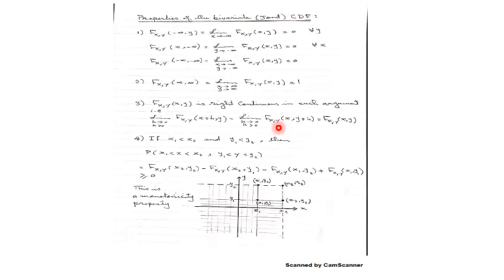So: if at least one of the arguments goes to negative infinity, capital F(x, y) will be zero. Another property: recall that in the univariate case, capital F of infinity equals one. Here, we have to let both x go to infinity and y go to infinity, and in this case capital F(x, y) will be one.